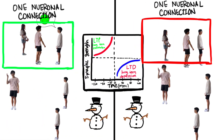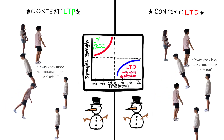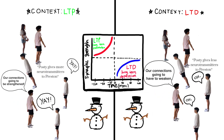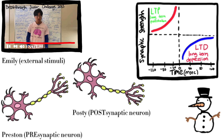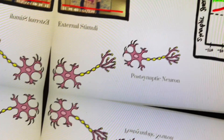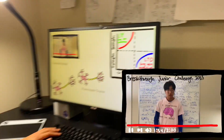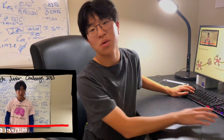One neuronal connection that faces STDP affects surrounding neurons, which modulates action potentials and our learning and memory system. External stimuli such as this video cause STDP in our brain.